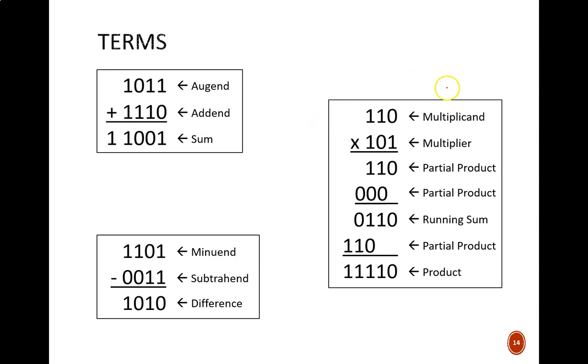Lastly, multiplication. The two numbers we multiply together are called the multiplicand and the multiplier. In this longhand approach, we now have intermediate steps. The partial products are computed from single bits of the multiplier applied to the multiplicand. Each next partial product is added to the previous, giving a running sum. And at the end, we get the final result called the product.